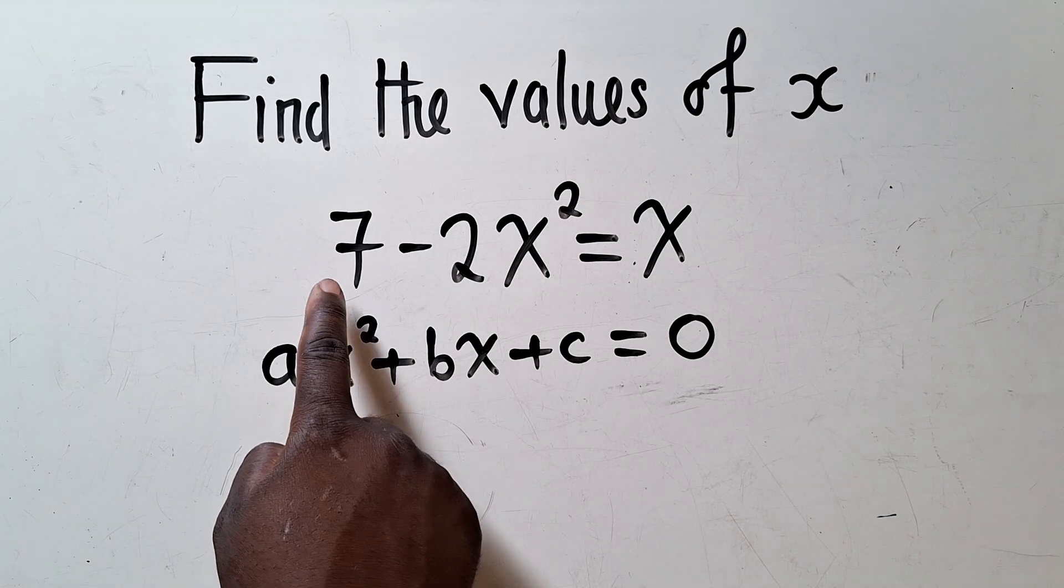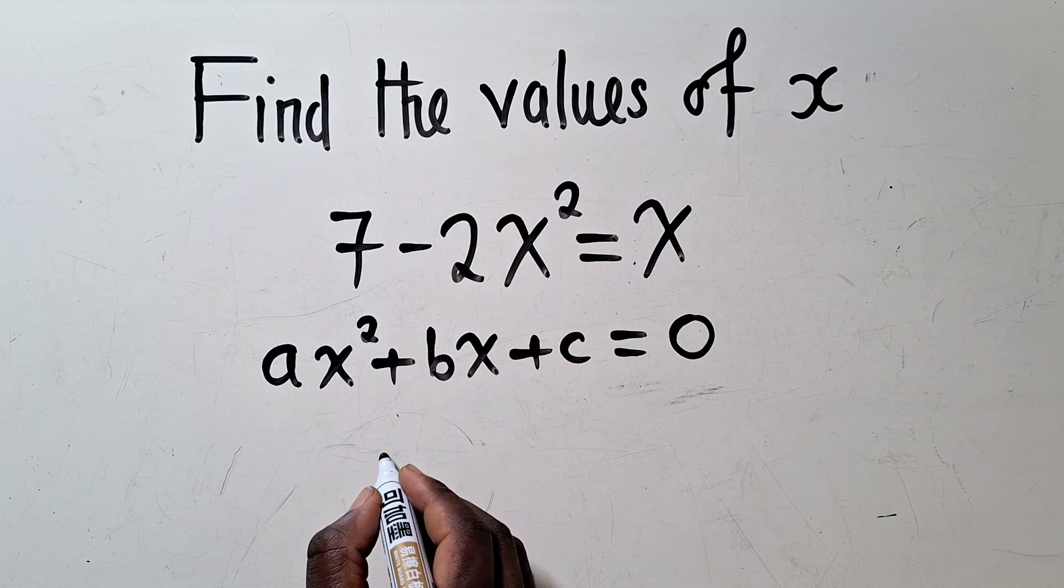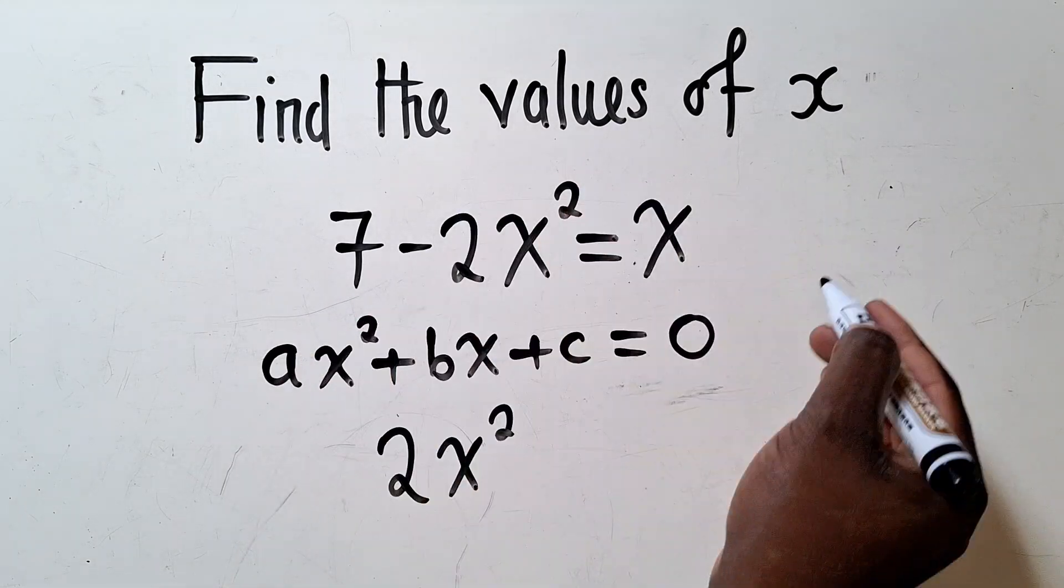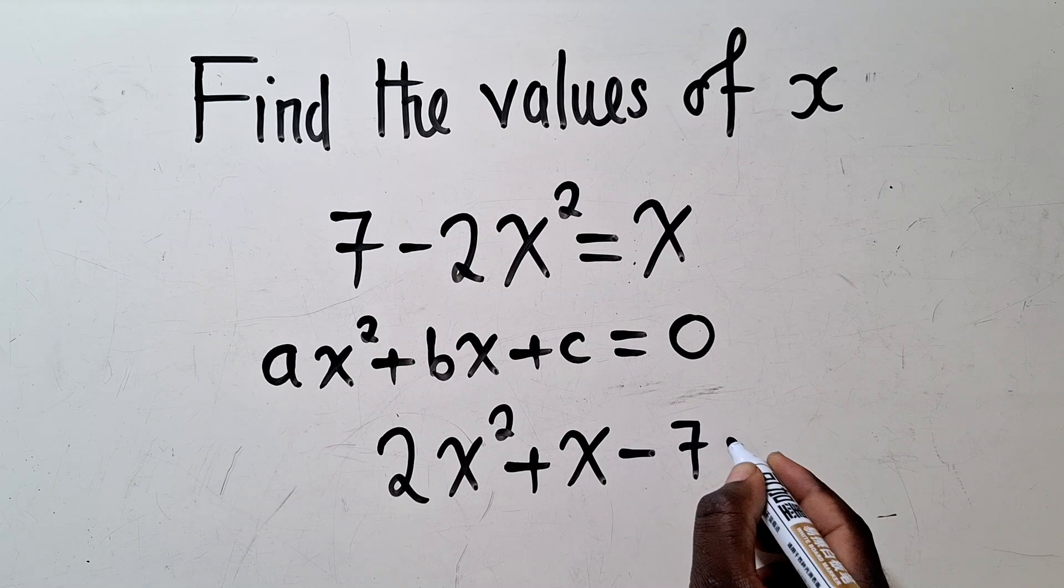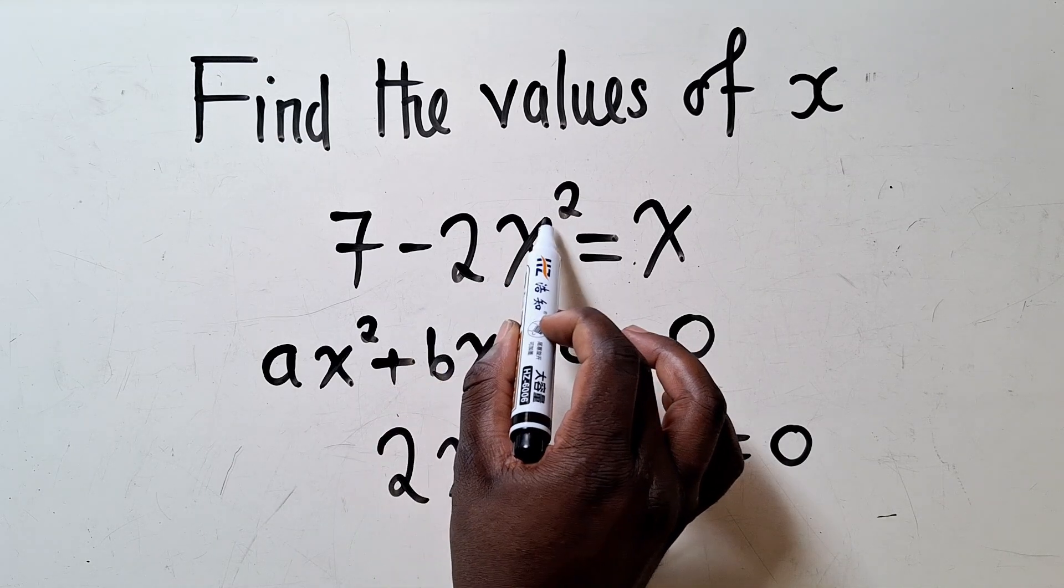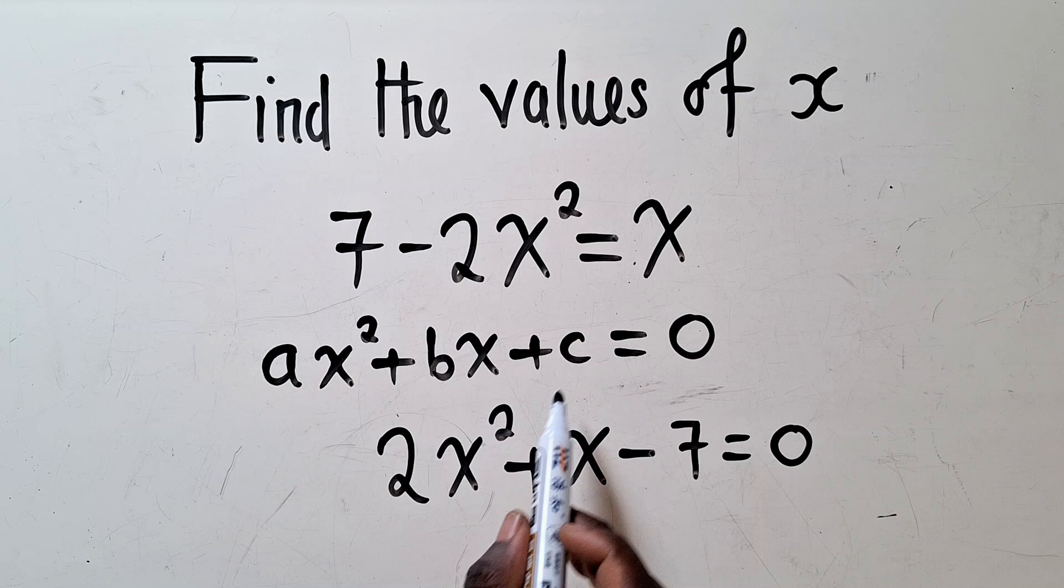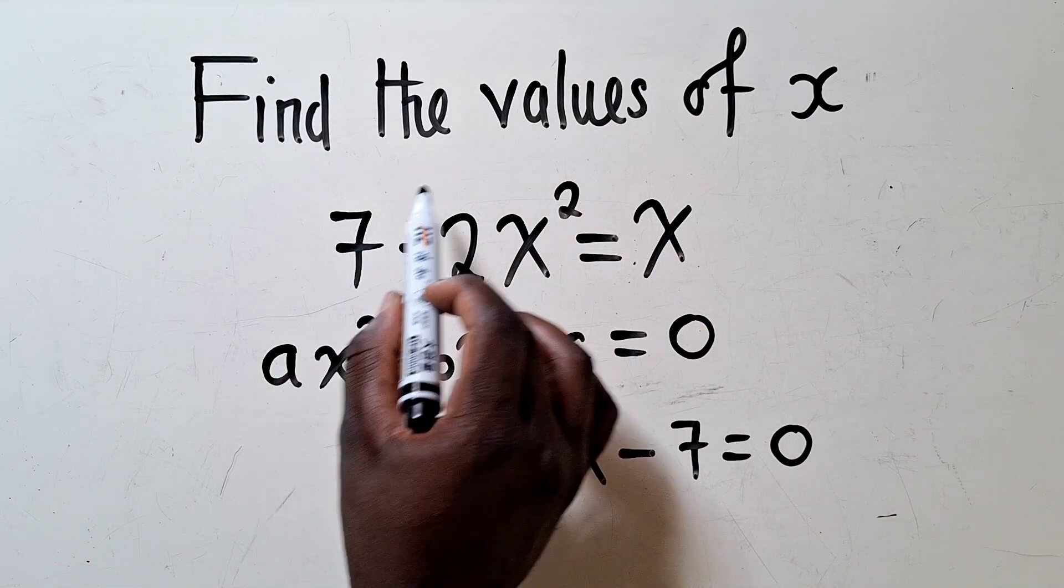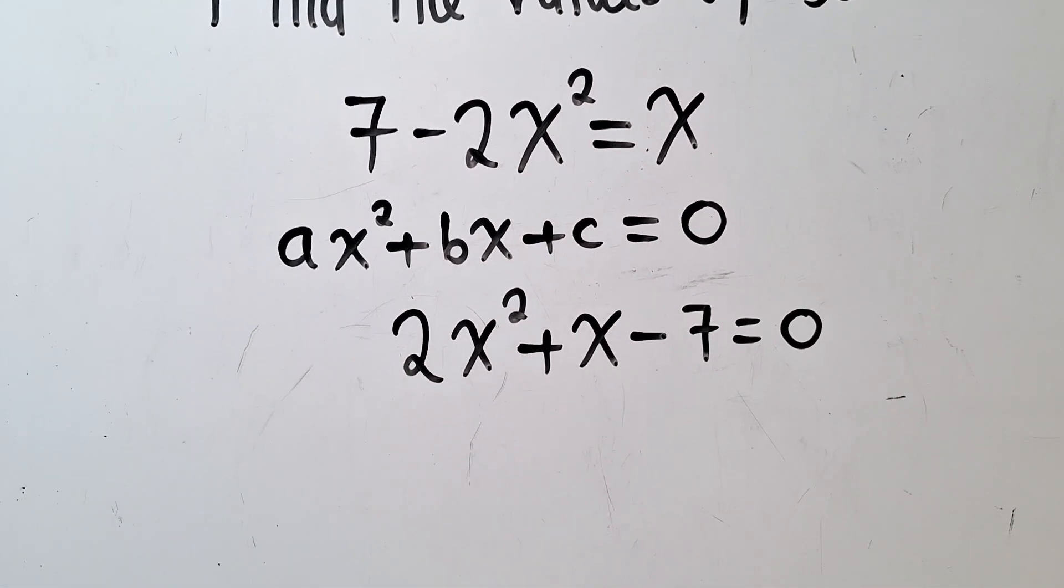Looking at the quadratic equation we have right here, it's not in standard form. We're going to write it in standard form by taking these two terms to this side of the equation. Negative 2x² will come this side, it will be positive 2x². x will maintain. 7 will be negative 7.